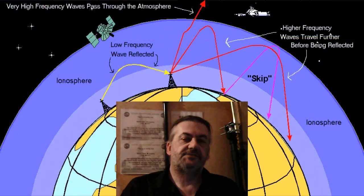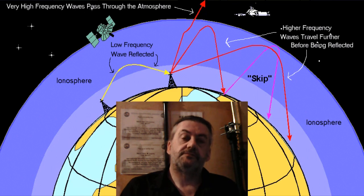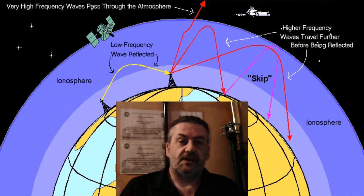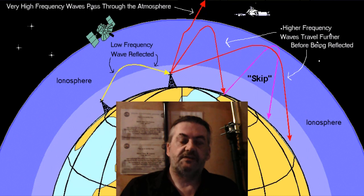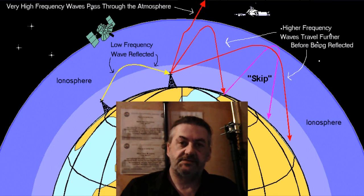At foundation level — the UK's entry-level licence — we're taught that VHF and UHF travel line of sight or near line of sight, whereas HF travels up into the atmosphere before being reflected or refracted back down to earth. The higher the frequency, the higher up into the atmosphere it goes.